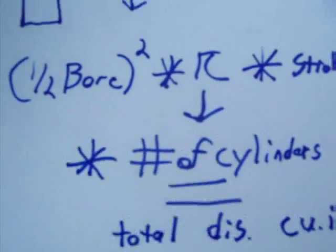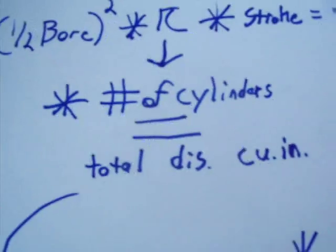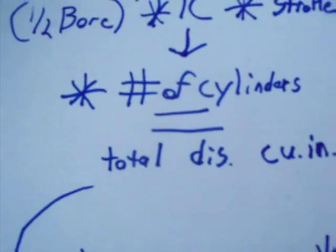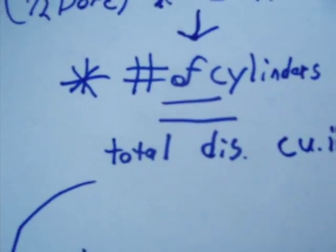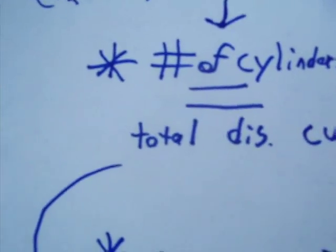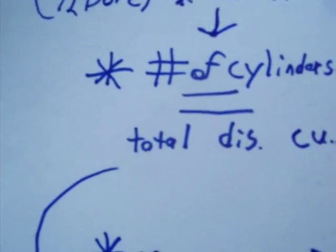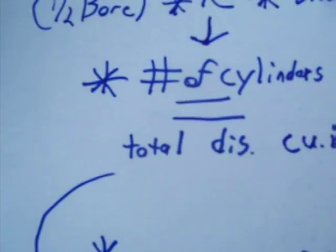Now, if you already know the volume of your engine in liters or cubic centimeters, all you've got to do is multiply it when it's in a liter. Basically, you just take the centimeters, divide by 1,000, you're going to get one liter. Then you multiply it by 61.02374.